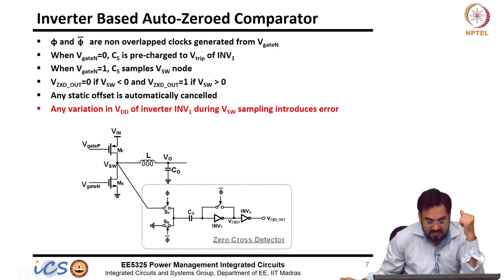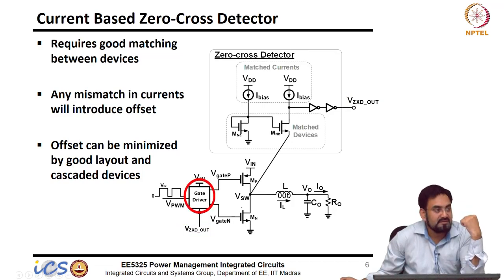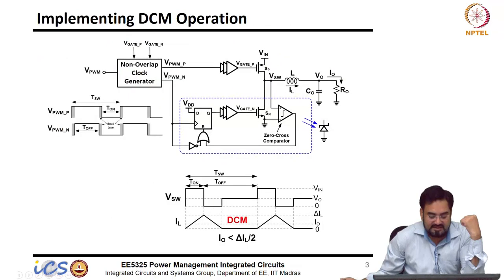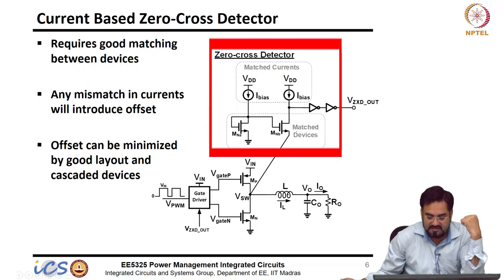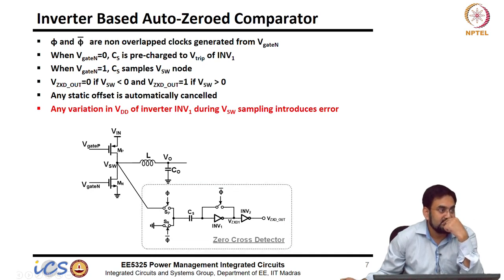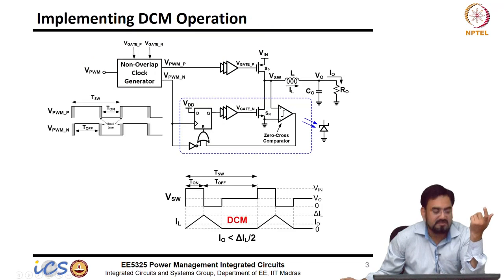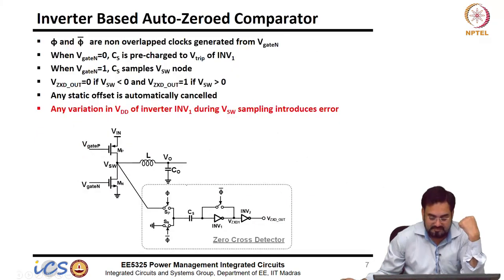This ZXD output is nothing but controlling your gate driver. This comparator is replaced by this zero-cross detection circuit, and all you are looking for is this ZXD output to turn off your NMOS.